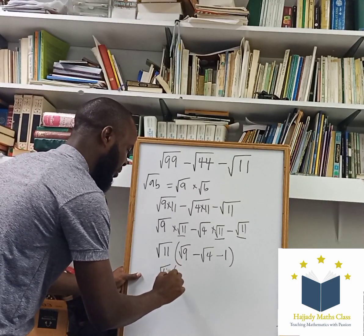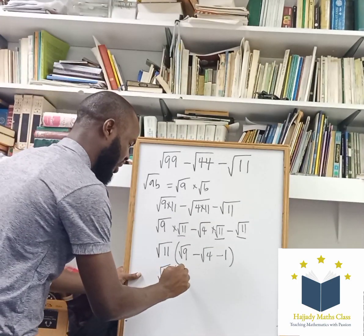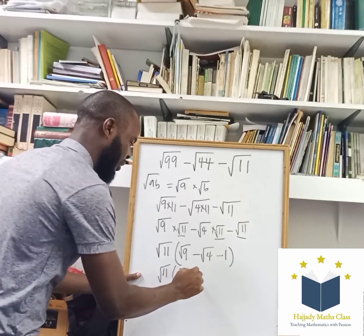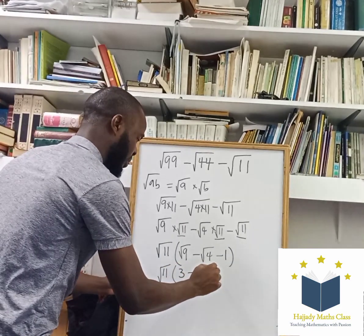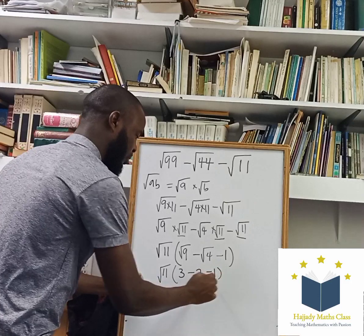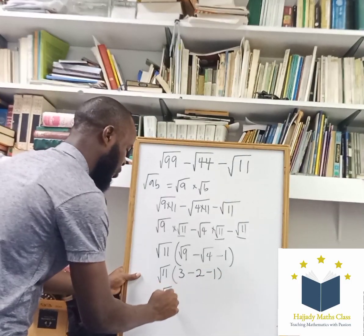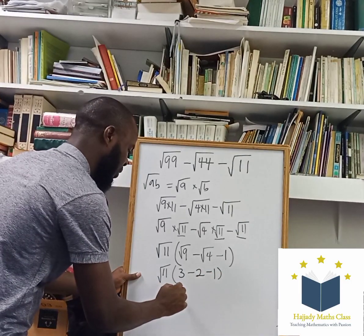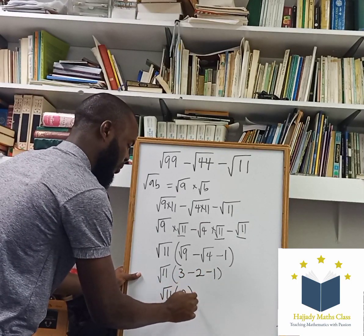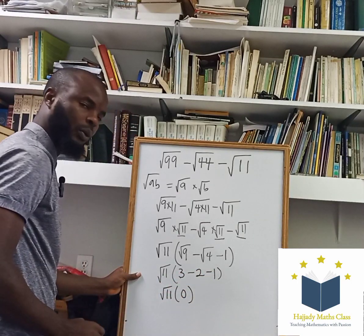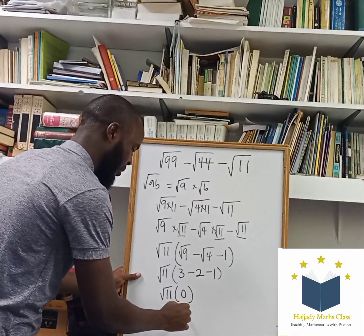Simplifying further, we have square root of 11 times the quantity in brackets. Square root of 9 is the same as 3, and square root of 4 is the same as 2. So we have root 11 times 3 minus 2 minus 1, which gives us 0. And as we know, any value multiplied by 0 is 0.